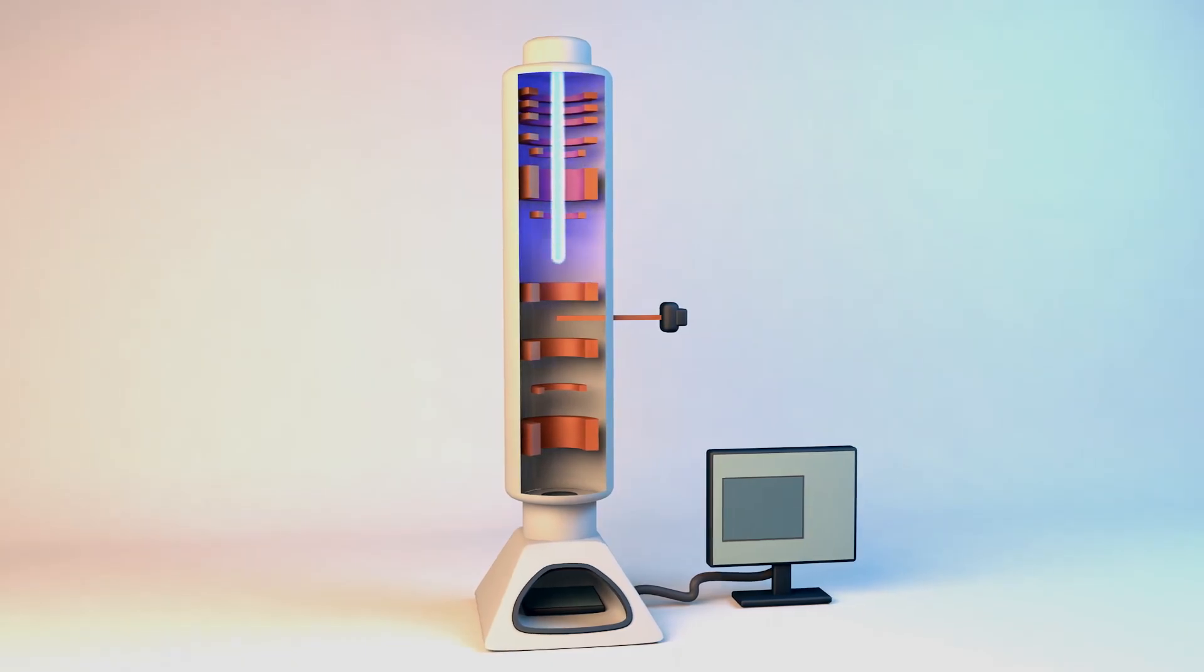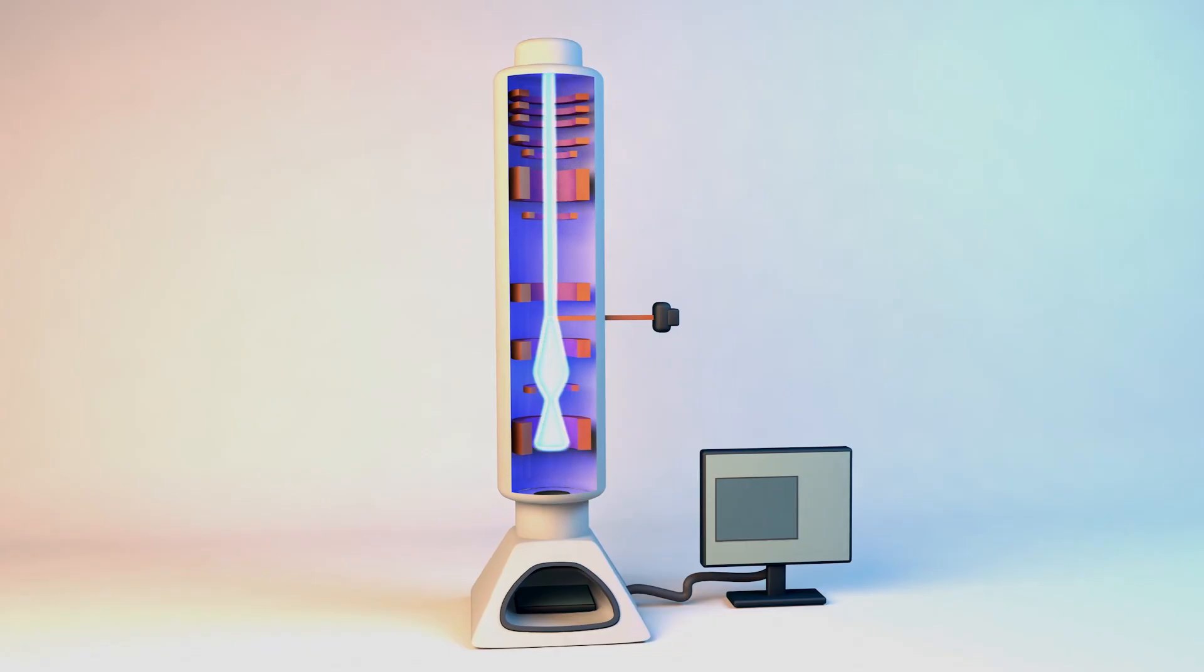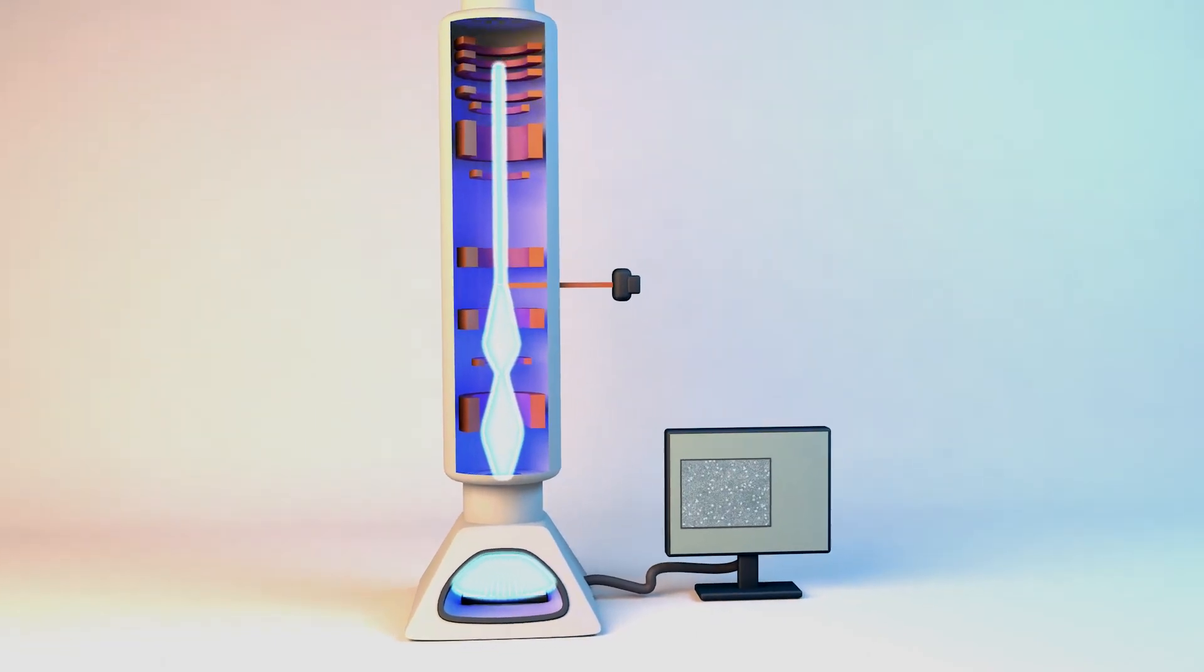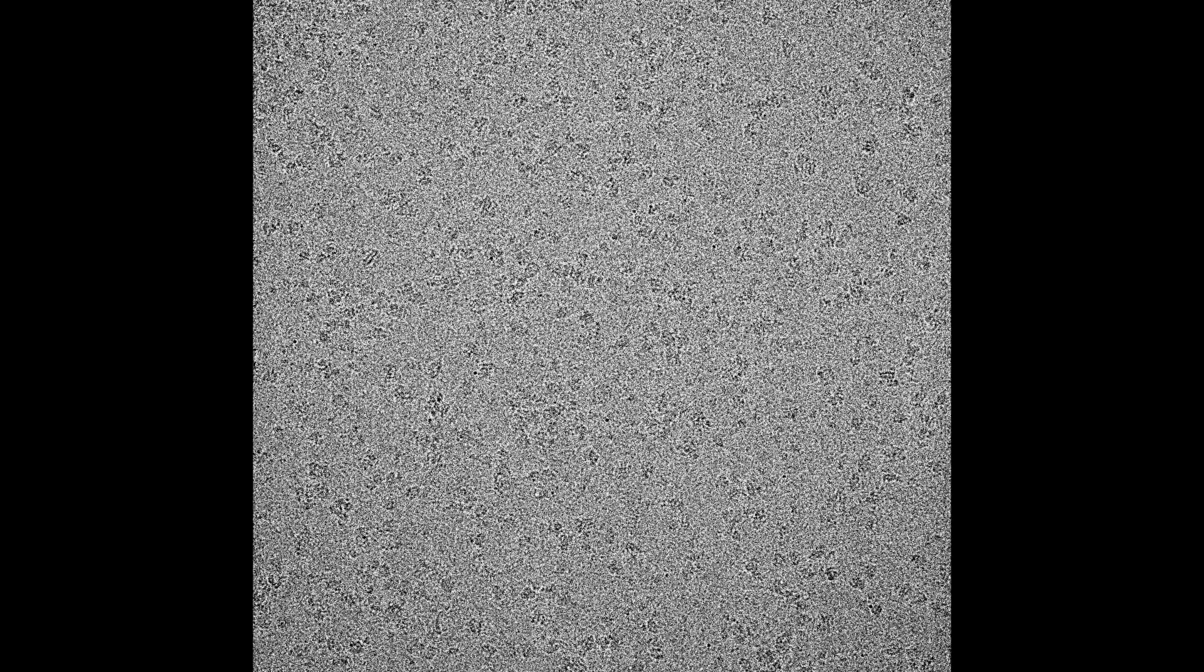Electrons are fired at the sample and detected by a camera to produce an image. The molecules in the sample are in different orientations.